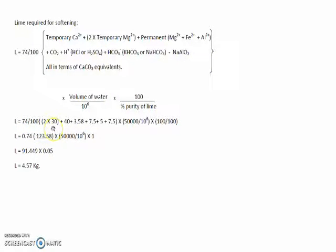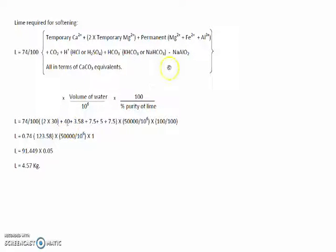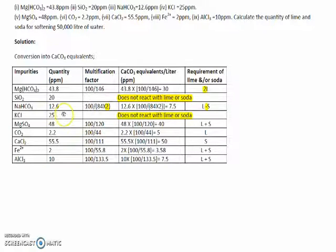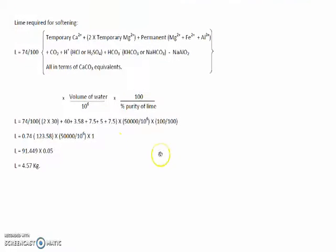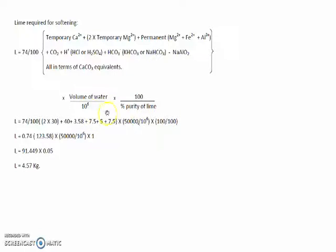Putting values into the lime formula: L = (74/100) × [2×30 (temporary magnesium bicarbonate, doubled) + permanent hardness magnesium salt CaCO₃ equivalents and other lime-consuming salts: 7.5 + 14 + 5 + 3.58 + 7.5 + 5 + 7.5 + 5 + 7.5] × 50,000 / 10⁶ × 100 / 100. The percentage purity of lime is not given, so it is taken as 100% pure. Calculating this gives the quantity of lime in kilograms.